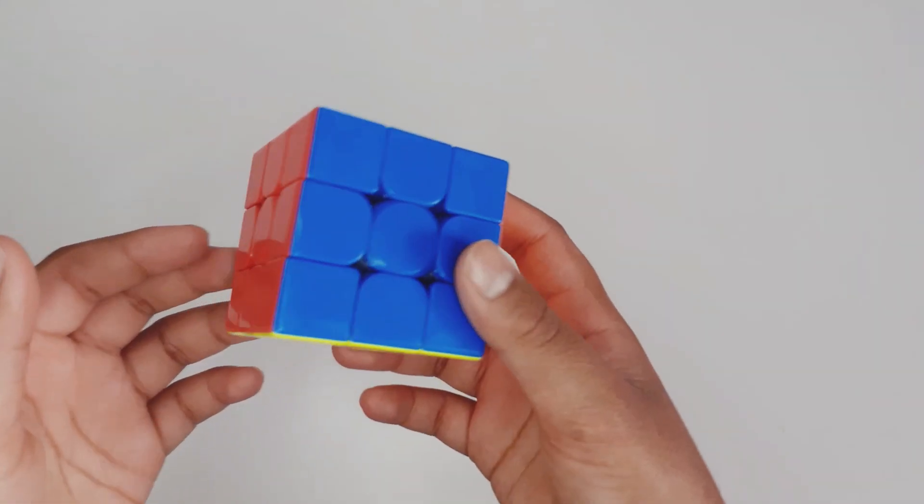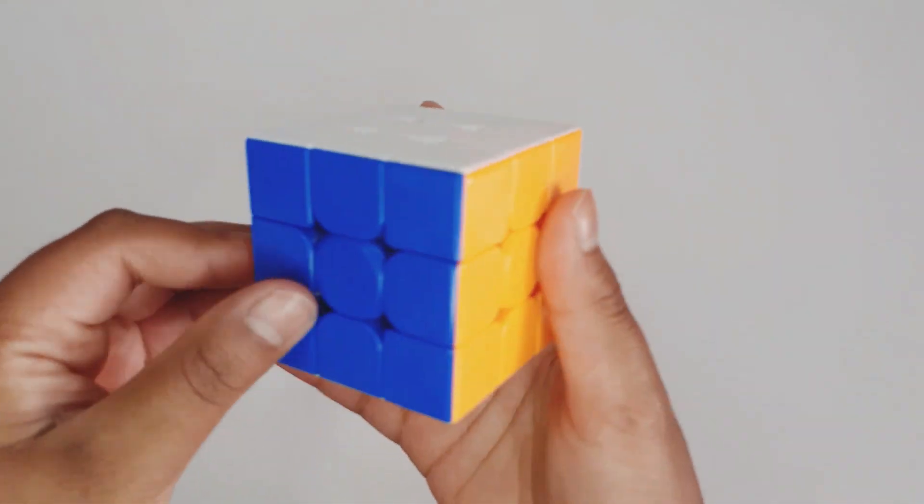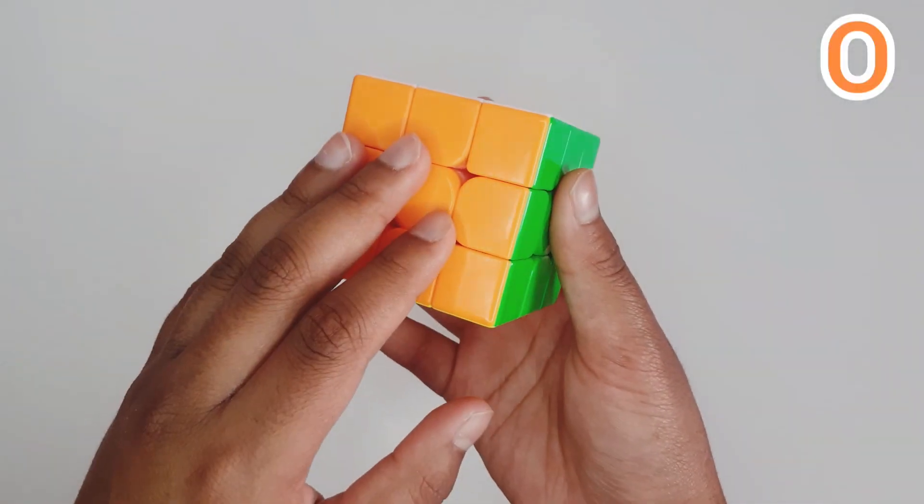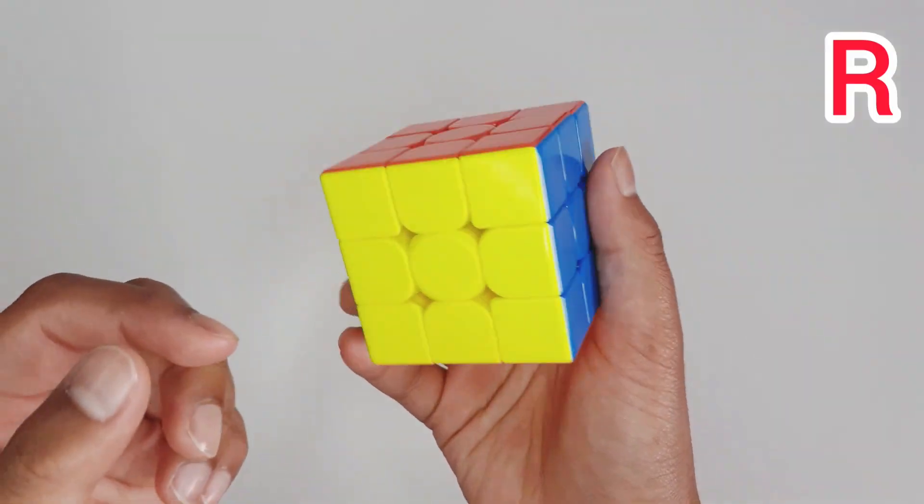So my first tip is to practice every single color. And I don't mean practice every color in one day, I mean practice it throughout weeks. So the first week you're going to do blue, the following week after that you can do orange, the third week you can do green, the fourth week red, and the final week yellow.